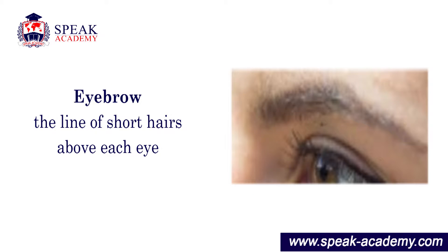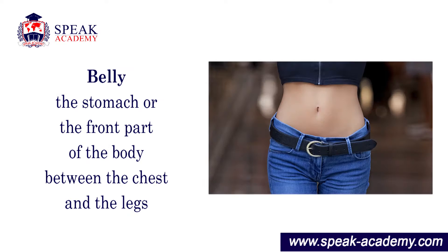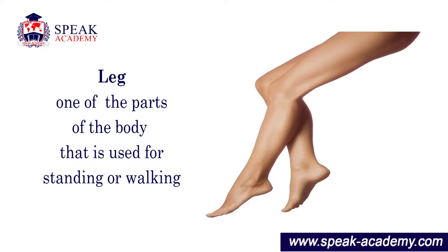Eyebrow: the line of short hairs above each eye. Belly: the stomach or the front part of the body between the chest and the legs. Leg: one of the parts of the body that is used for standing or walking.